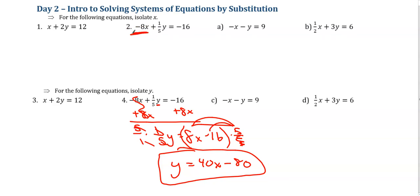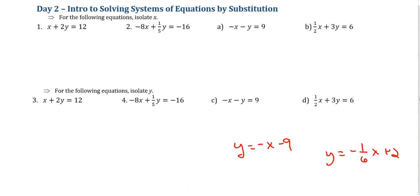Go ahead and get y by itself for c and d. So if you isolated y for c and d, you ended up with y equals negative x minus 9. I would argue that both a and c were pretty equivalent. So there wasn't a really good choice in terms of should I get x by itself or should I get y by itself. When you looked at d, we got y equals negative 1/6 x plus 2. Not very pretty. And I would argue getting x by itself in this case was better.